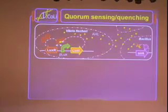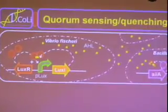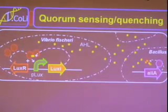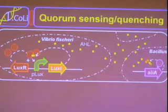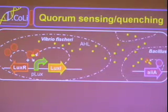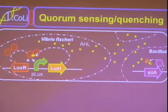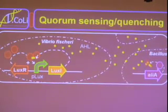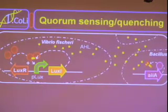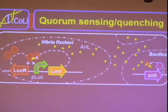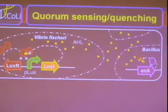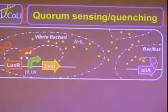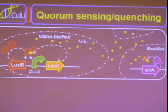We've achieved this through quorum sensing. It was discovered in a bacteria called Vibrio fischeri. And you've got a gene called LuxR, which will create a protein called LuxR, which can bind AHL. And AHL is a small diffusible molecule. So this complex will then activate the lux promoter, causing LuxI to be expressed. And LuxI is an enzyme which creates more AHL. And then in other bacteria, we've got a gene called AIIA, which creates an enzyme which will destroy AHL. So it can quench the system.